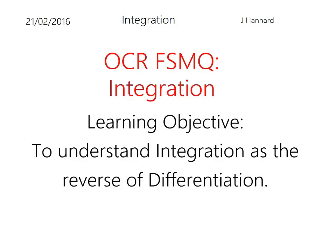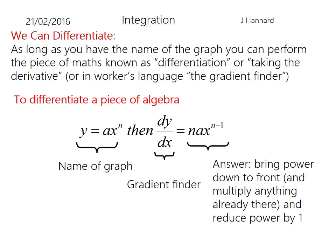So the learning objective for today is to understand integration as the reverse of differentiation. The last few lessons we've talked about differentiation, which is where if you've got the name of the graph y equals ax to the n, you can find the gradient at any point on that curve by using dy/dx equals power to the front, knock one off the power. But today we want the opposite of that. Differentiation is going down the power, so you can probably guess that integration is going up the powers.